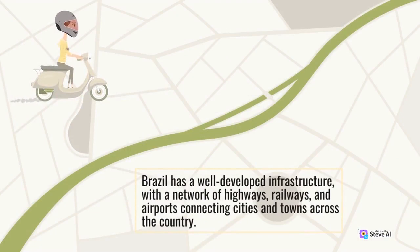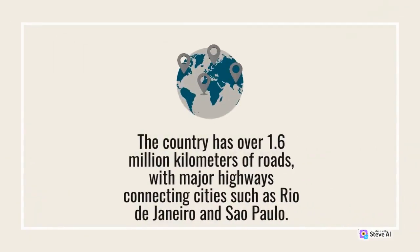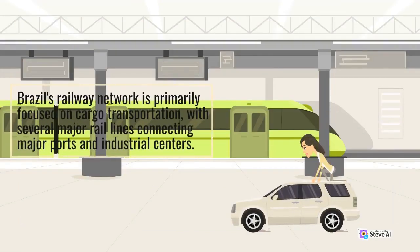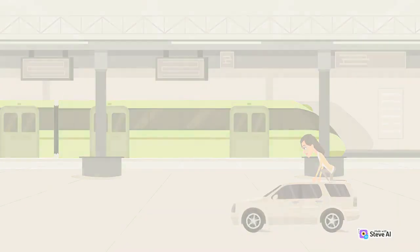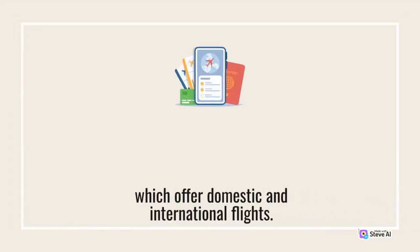Brazil has a well-developed infrastructure, with a network of highways, railways, and airports connecting cities and towns across the country. The country has over 1.6 million kilometers of roads, with major highways connecting cities such as Rio de Janeiro and São Paulo. The country also has several major airports, including the São Paulo Guarulhos International Airport and the Rio de Janeiro Galeão International Airport, which offer domestic and international flights.